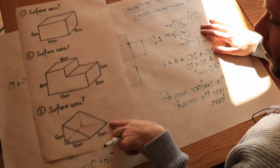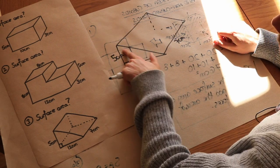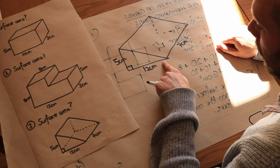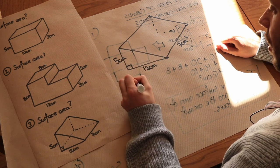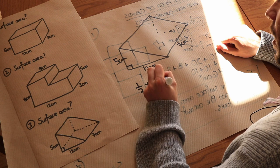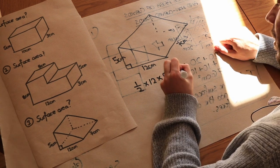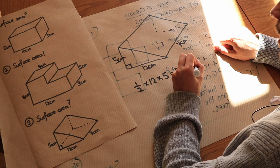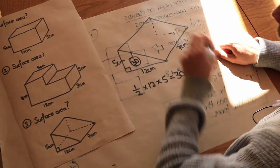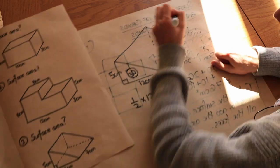Finally, we have a triangular prism. The area of the front triangle is half times base 12 times height 5, which is 30 centimetres squared. The back triangle is also 30 centimetres squared.